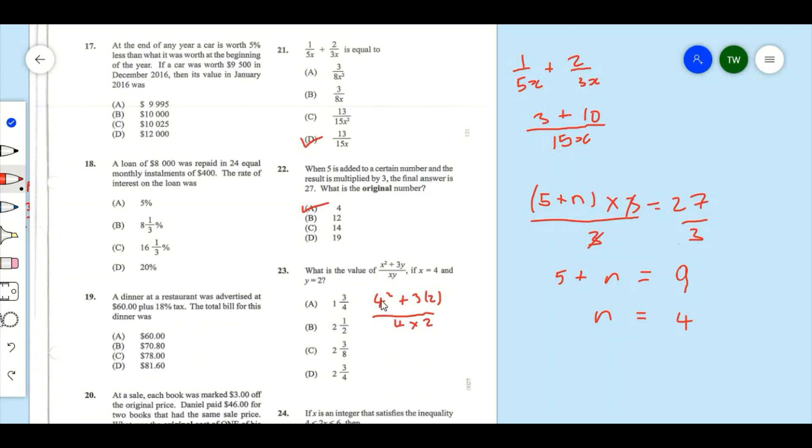Now 4 squared here is going to give us 16, and 3 times 2, that's going to give us 6, and 16 plus 6, that's going to give us 22, all over 4 times 2, that's going to give us 8. Now both 22 and 8 can be divided by 2, so we're going to divide the numerator by 2 and the denominator by 2.